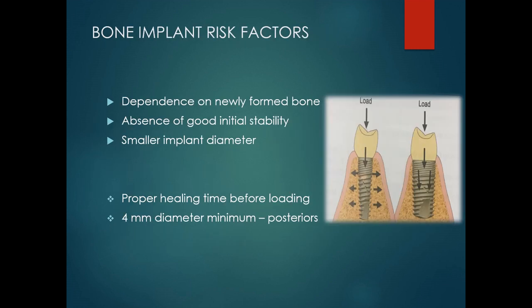Next is the bone-implant risk factors, which include dependence on newly formed bone, absence of good initial stability, and smaller implant diameter. While placing an implant, we have to consider biologic factors like bone quality, bone quantity, and cortical bone thickness. Proper healing time before loading an implant allows the bone to properly remodel, replacing primitive woven bone with mature lamellar bone, and leads to functional adaptation of the bone structure to load by changing the dimension and orientation of its supporting elements.